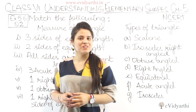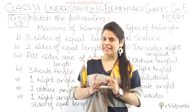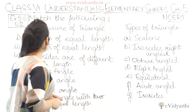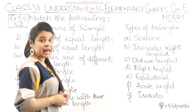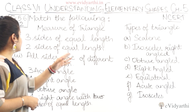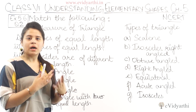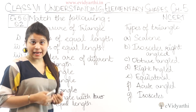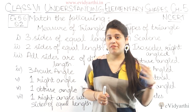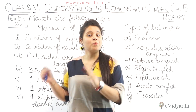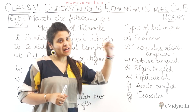Hello guys, this is Manci Foggy with Hathi.N. Now we are starting with question number 2 of exercise 5.6. From this question we have to match the following. You have two sides here — one is the measure of triangle, and the other column is types of triangle. You have to match them, identifying which measure corresponds to which type of triangle.